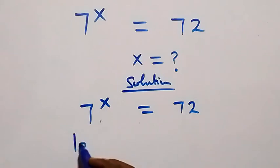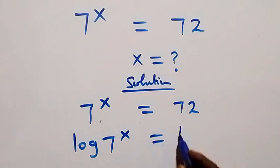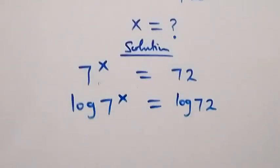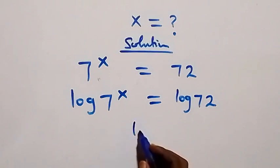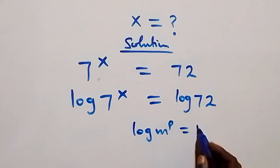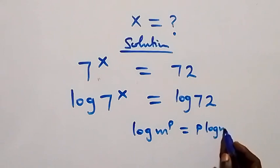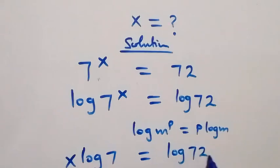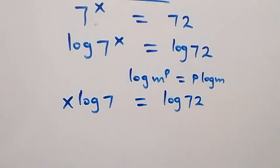We have log of seven raised to power x equals to log 72. Applying the power law of logarithm — log m raised to power p equals to p times log m — the power here is x, so we have x times log 7 equals to log 72.